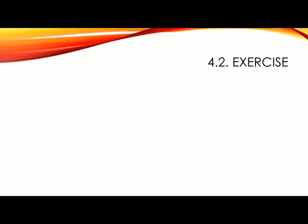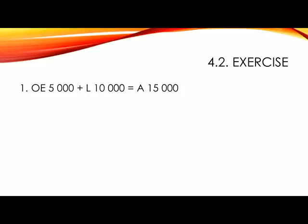Try now to do exercise 4.2 based on this equation. Pause the slideshow and continue only when you are done. Now that you have finished exercise 4.2, let's see how well you did. The first question says: if the owner invested R5,000 in a business and R10,000 is borrowed, what are its assets worth? You've got owner's equity of R5,000 and liabilities of R10,000, which means your assets must total R15,000. All you do is add your equity and liabilities together to get assets.